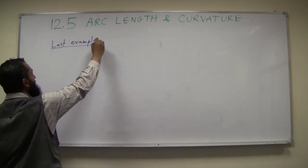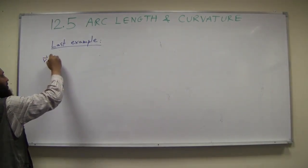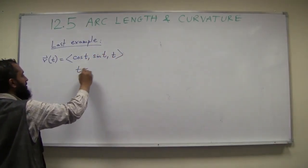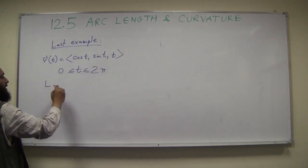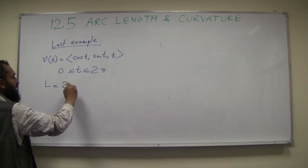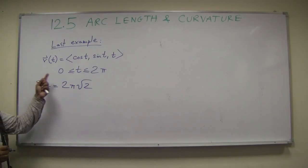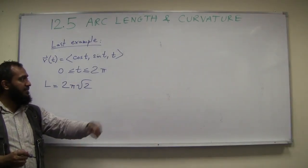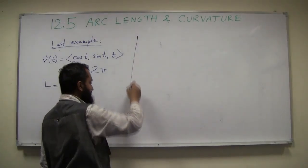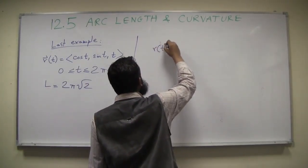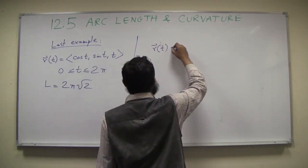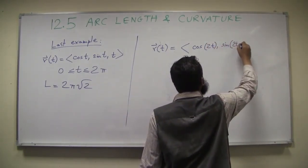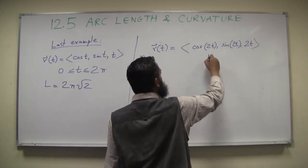The last example we saw was the helix — the circular spiral. We had r(t) = (cos t, sin t, t), with t between 0 and 2π, and we found that the length of this curve was 2π√2. Now we're going to take the same physical curve, parameterize it a different way, calculate the length with that other parameterization, and find out it doesn't make a difference.